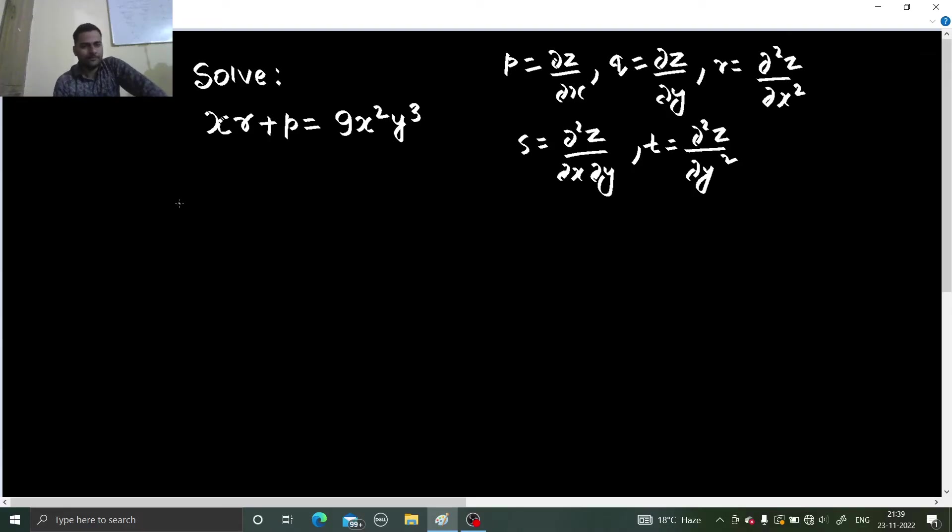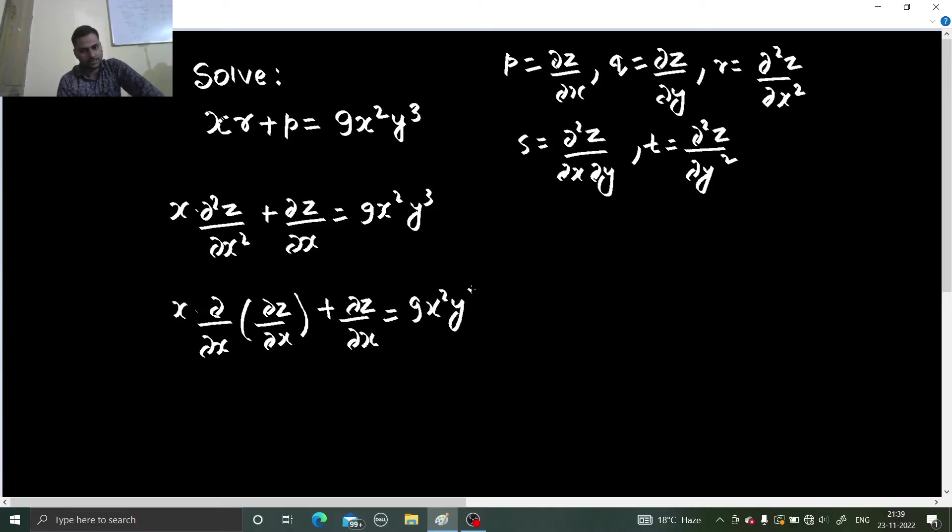Coming to this problem, we have xr is nothing but x del 2z by del x square and your p is del z by del x equals to 9x square yq³. This we can write as del by del x of del z by del x plus del z by del x equals to 9x square yq³.